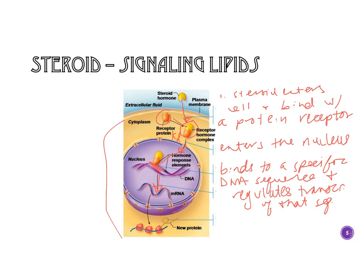Once transcription is turned on, that sequence is transcribed into mRNA. The mRNA is processed — it gets a poly-A tail and a methylated cap on the other end — and exits the nucleus. Once out, it is translated by ribosomes into new protein that will fold and carry out a function, such as a glycolytic protein involved in breaking down sugar.